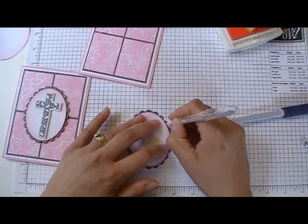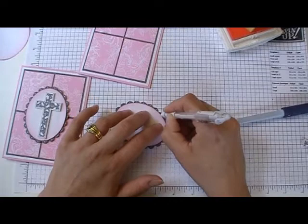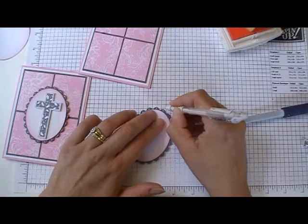And then I took, you can take your signal pen. I have a white gel pen. It really doesn't matter. And you just go around the edges. And I just did little dots. Colored them in.